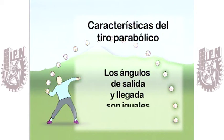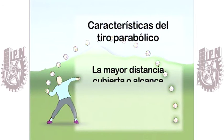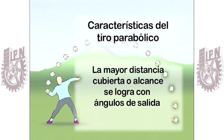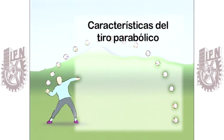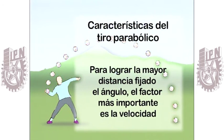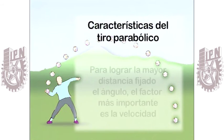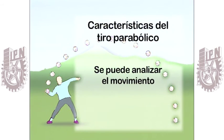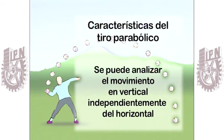Los ángulos de salida y llegada son iguales. La mayor distancia cubierta o alcance se logra con ángulos de salida de 45 grados. Para lograr la mayor distancia fijado el ángulo, el factor más importante es la velocidad. Se puede analizar el movimiento en vertical independientemente del horizontal.